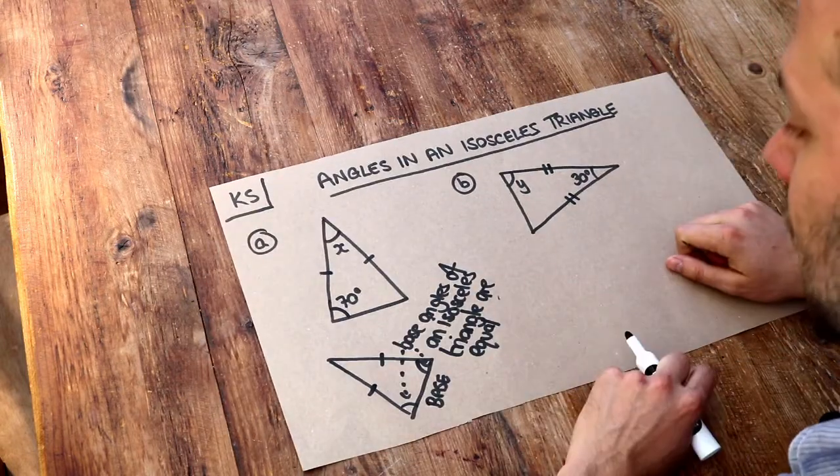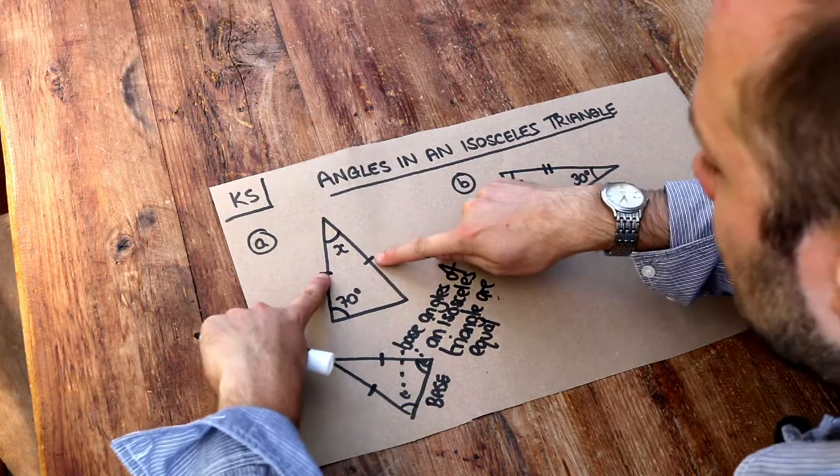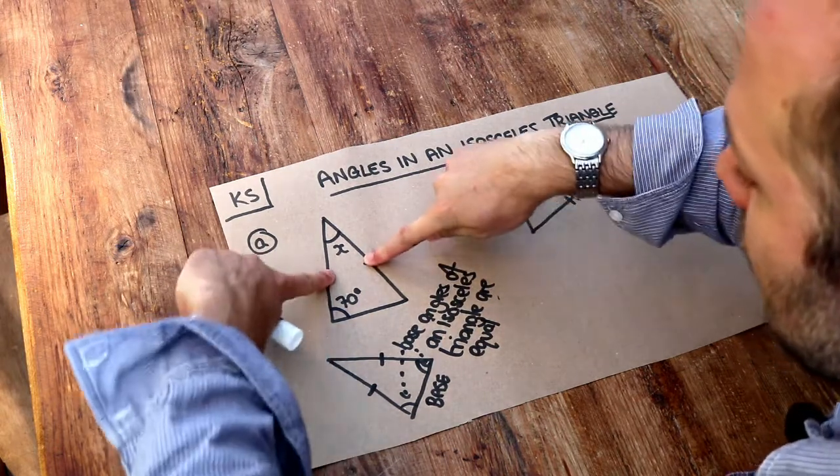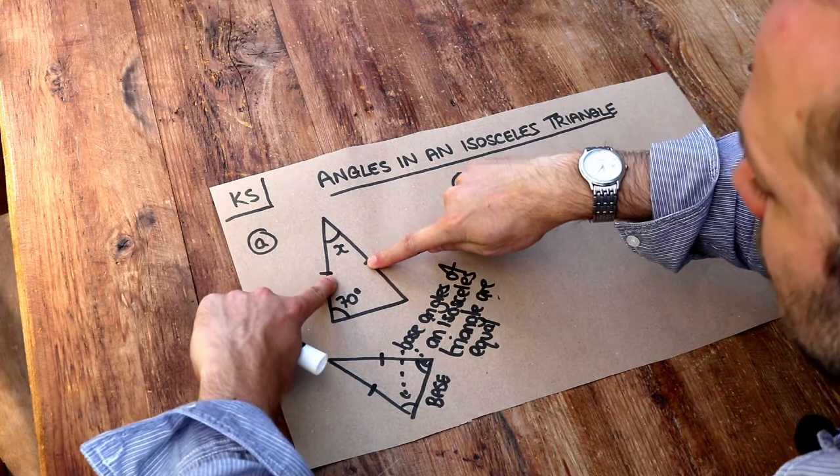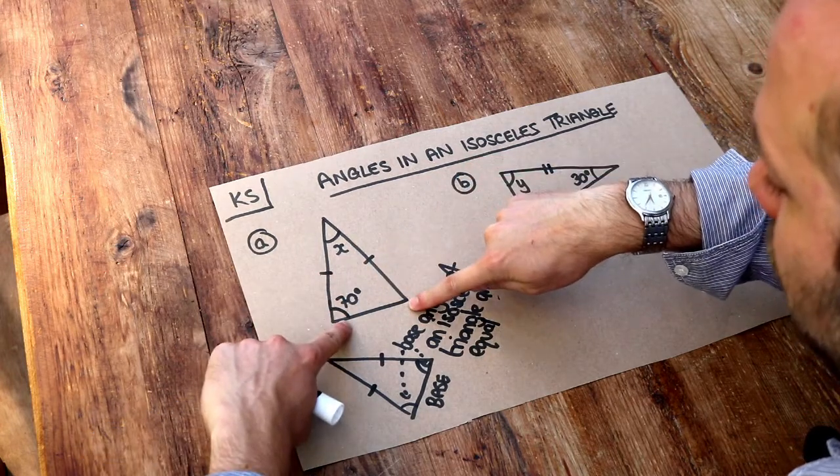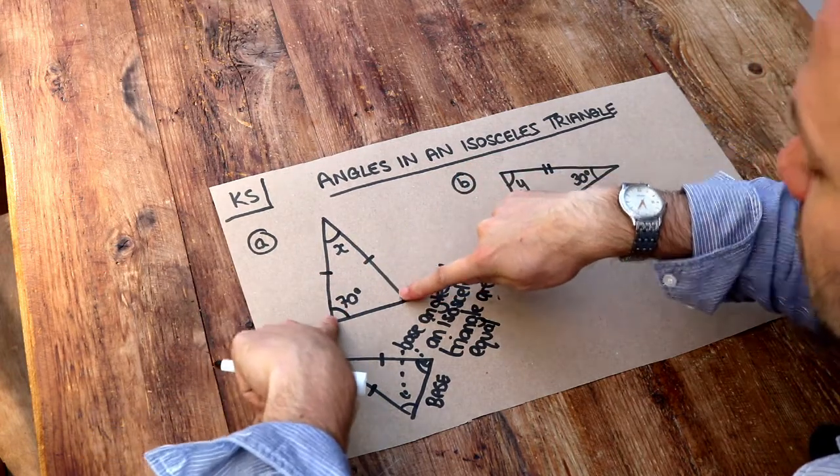But let's use it in this problem here. Now if we put our two fingers on the two sides which are the same and then allow our fingers to go away from each other until we get to two vertices, two corners, then these angles must be the same.